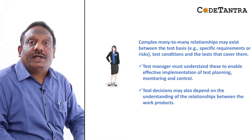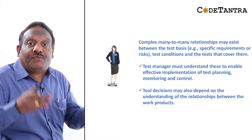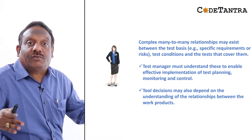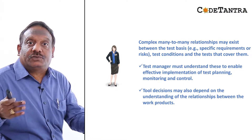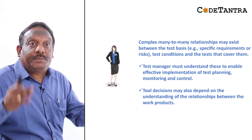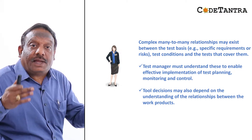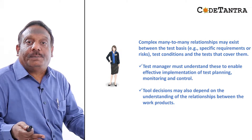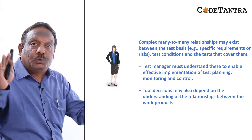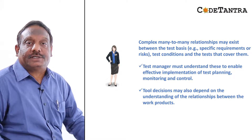A test manager must understand these many-to-many relationships to enable effective implementation of test planning, monitoring, and control. You may have to establish backward and forward traceability to remain in control. Additionally, tool decisions may also depend on understanding the relationships between the work products, so you have to be aware of these many-to-many relationships across all project documentation.